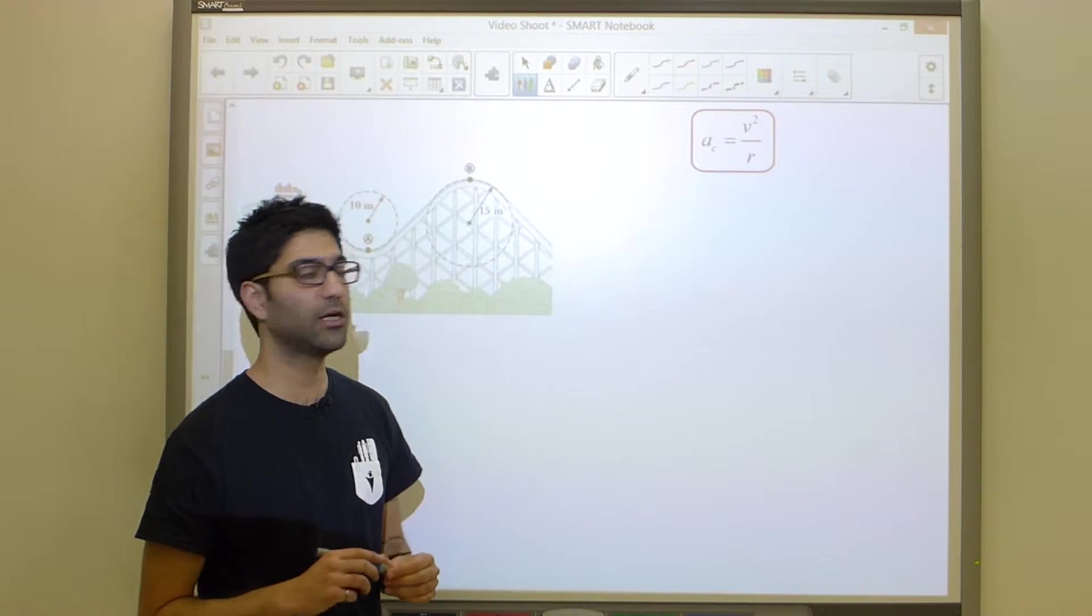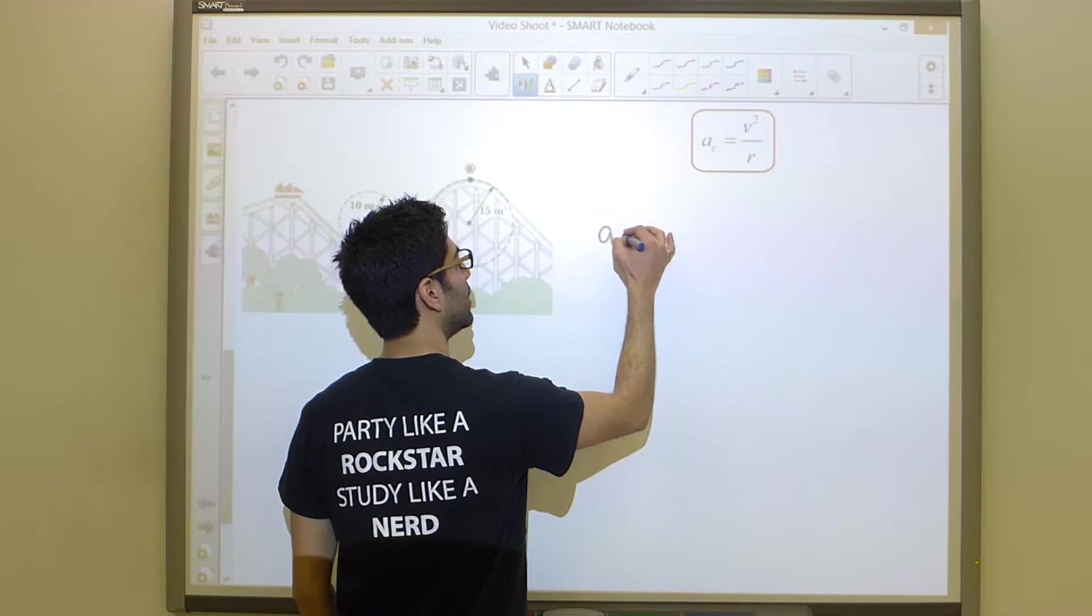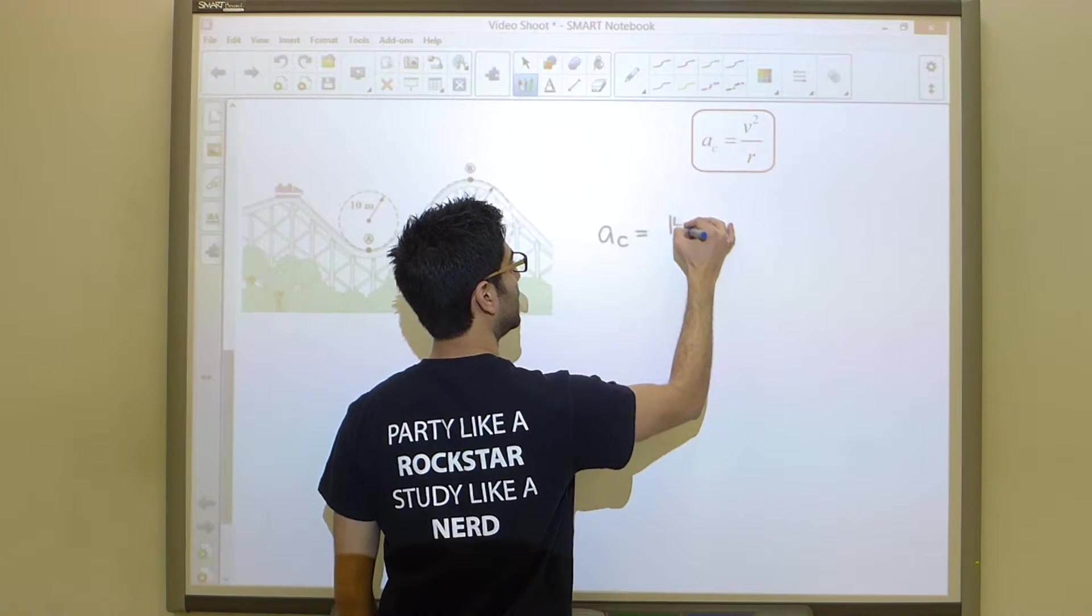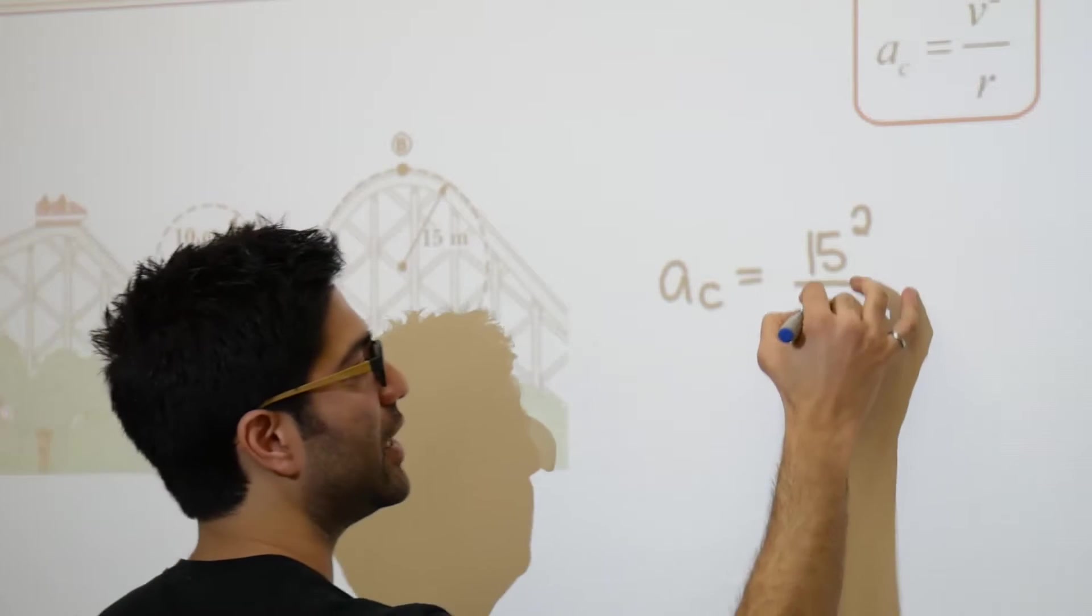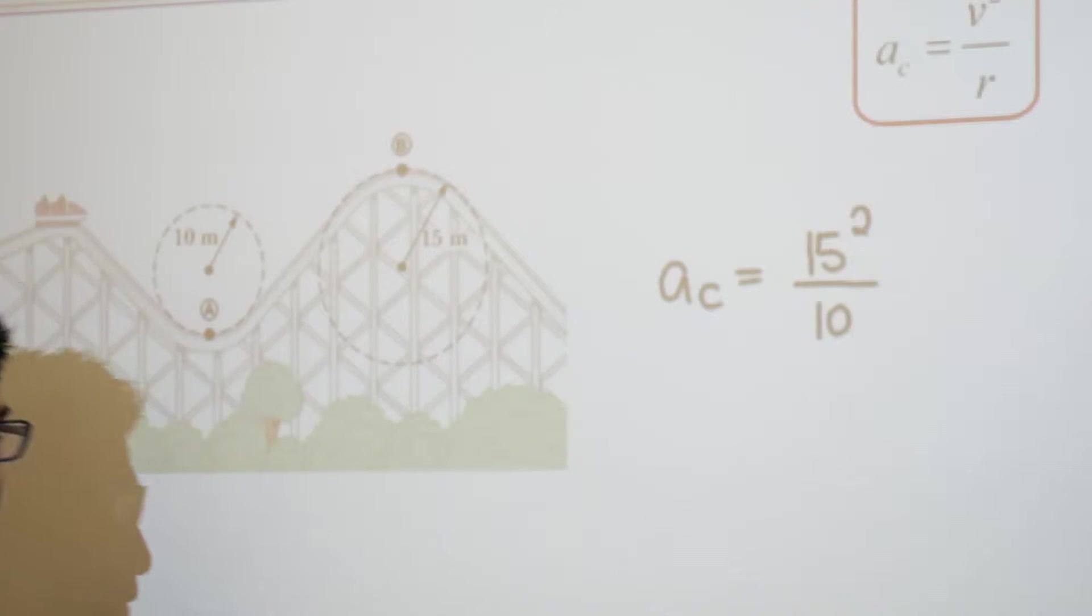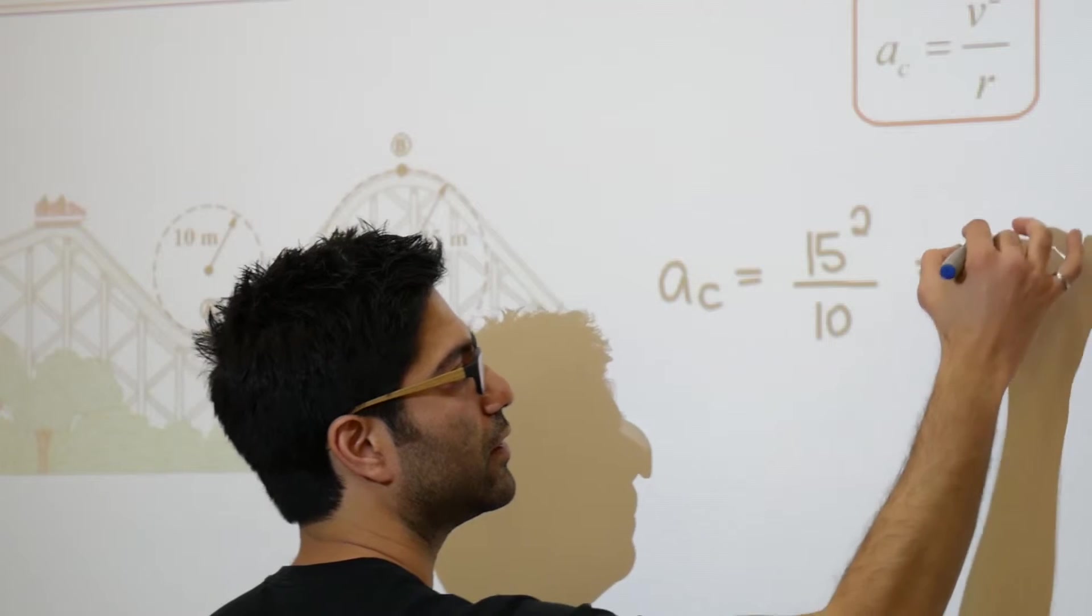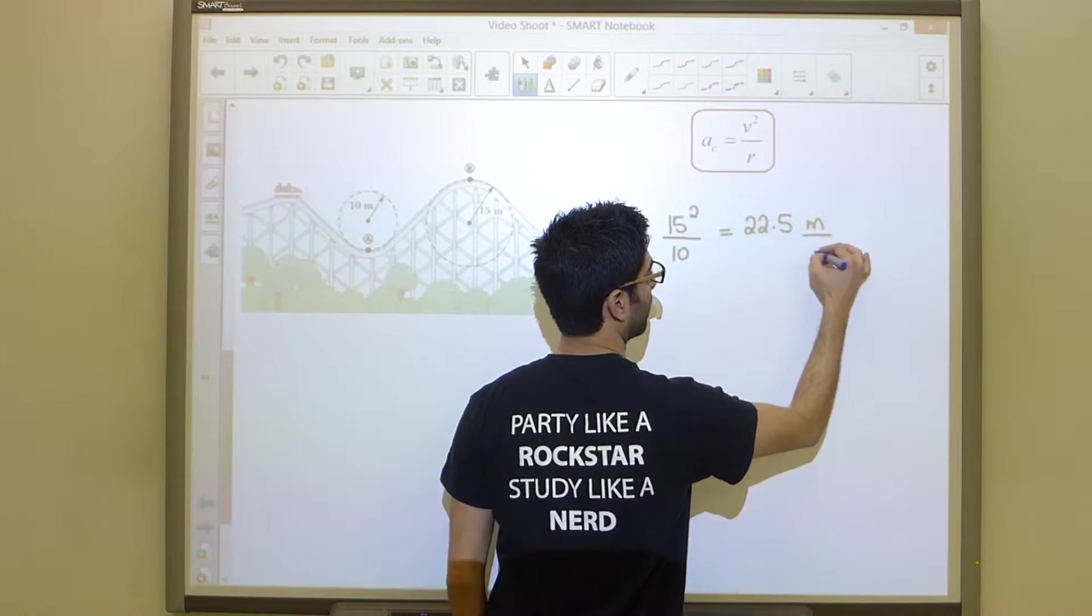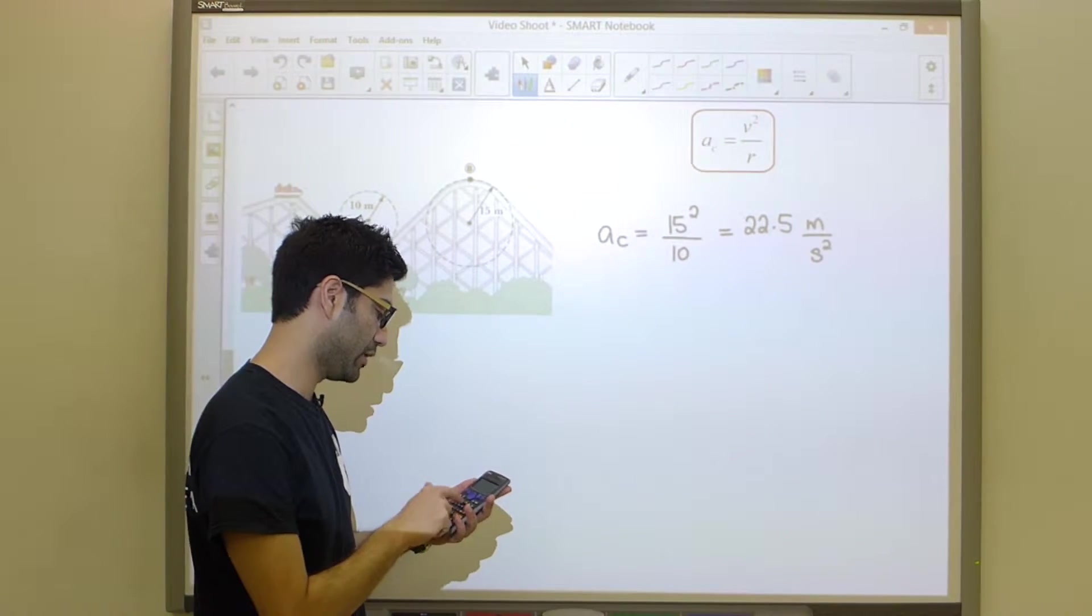For part A, the centripetal acceleration can be calculated because we know the velocity is 15, given in the problem. Looking at the diagram, the radius equals 10. So 15 squared is 225 divided by 10, which gives us an acceleration of 22.5 meters per second squared.